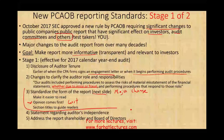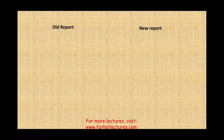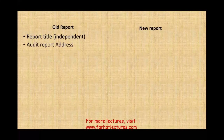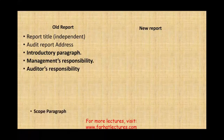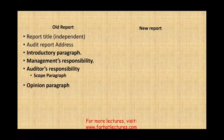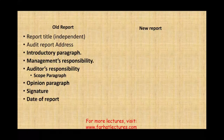Let's look at what the new report looks like. Here's what the old report looks like first. The old report started with a title including the word 'independent,' then the auditor's report address, an introductory paragraph, management responsibility paragraph, auditor's responsibility that included the scope of the work, the opinion paragraph, and the signature and date of the report. That's what the old report looks like.